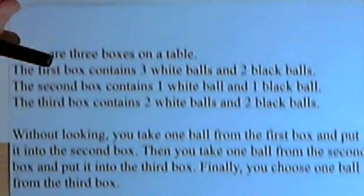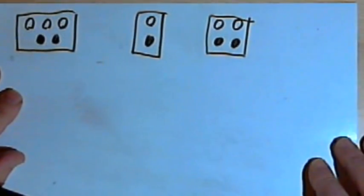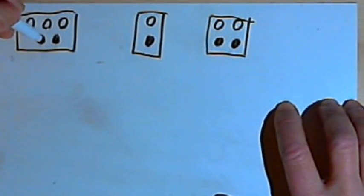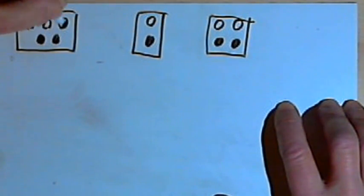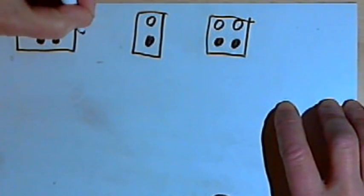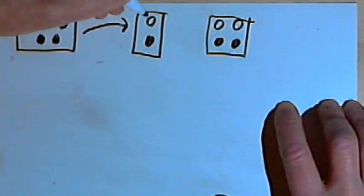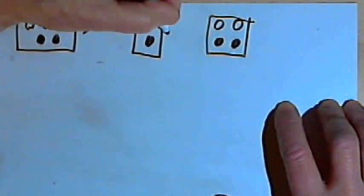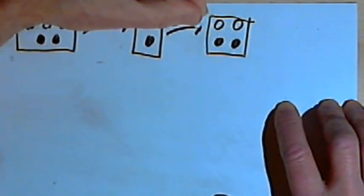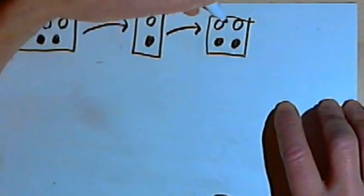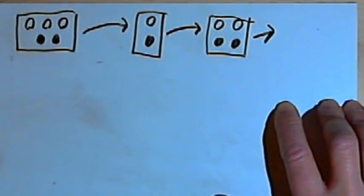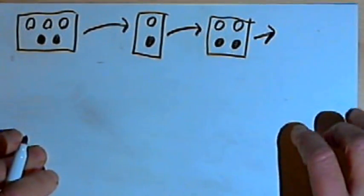So let's start out with a picture. Here's the first box — it's got three white balls and two black ones. We're going to take a ball from that box without looking and put it into the second box. The second box starts out with a white ball and a black ball; after we put another ball into it, it'll have three balls. Without looking, we take one of those three balls, put it into the third box, which would then have five balls in it, and then we choose a ball from that box. We want to know the probability of that ball being white, and the probability of it being black. So let's do this with a tree diagram.